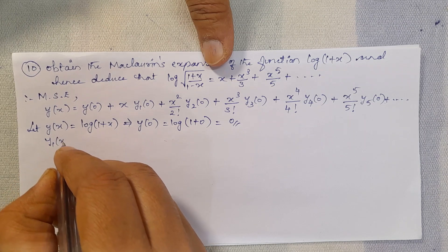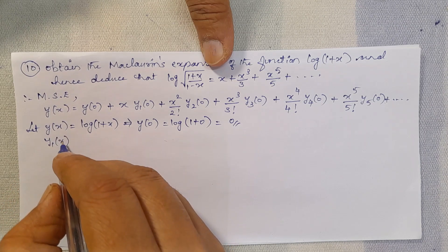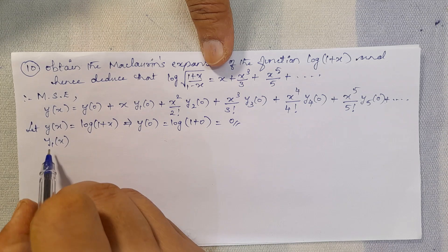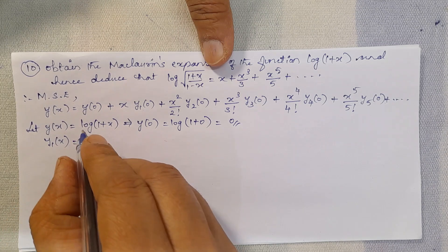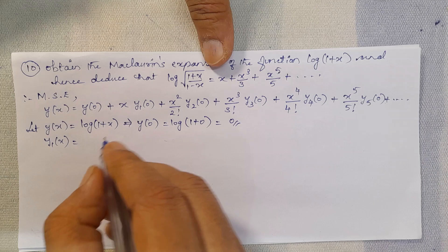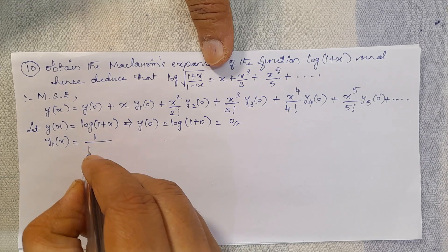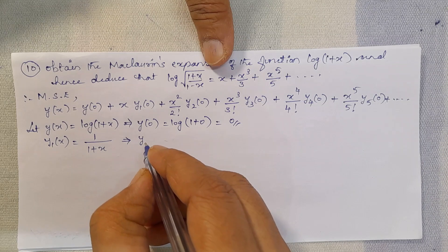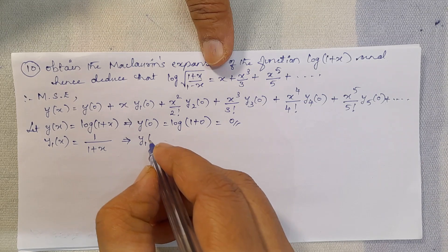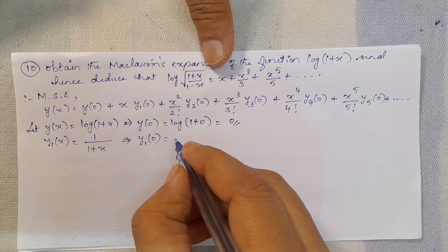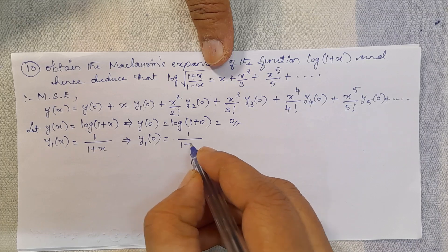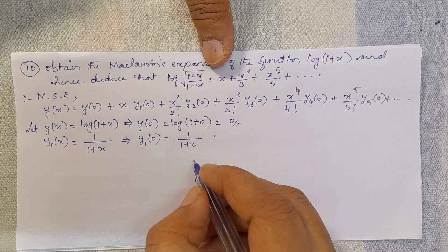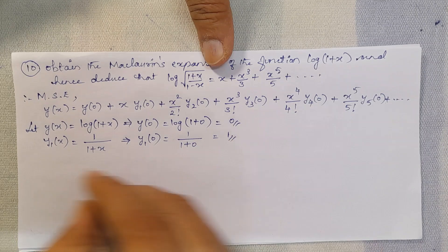Next, find y1(0). y1(x) is the differentiation of y(x). Differentiation of log(1 + x) is 1/(1 + x). So y1(0) = 1/(1 + 0) = 1/1 = 1.